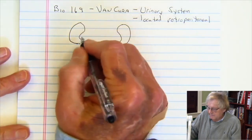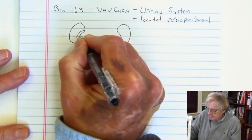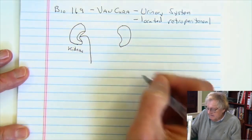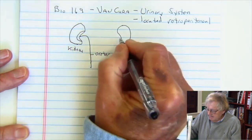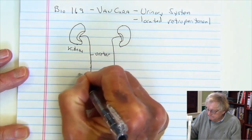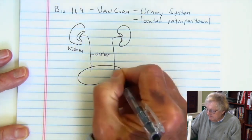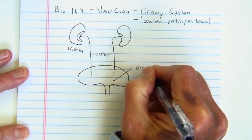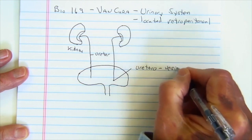Looking at the basic anatomic structure, the kidney has an area coming out of it. Coming out of my kidney is going to be my ureter. The ureters — the paired ureters — will then empty into the bladder, emptying towards the base at something called the ureterovesicular junction.